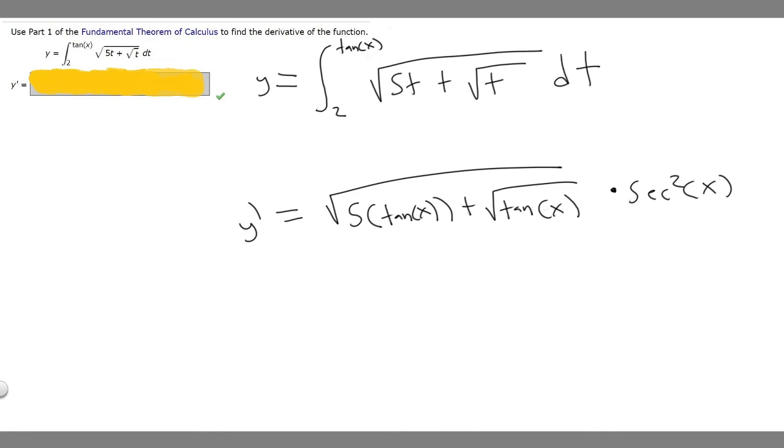But we're doing it with respect to tangent of x. So since we're doing it with respect to tangent of x, you have to multiply it by the derivative of the thing you plug in. We plug in tangent of x, and then we multiply by the derivative of tangent of x because we're plugging it in with respect to that.